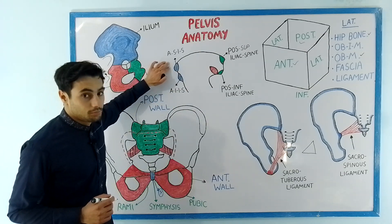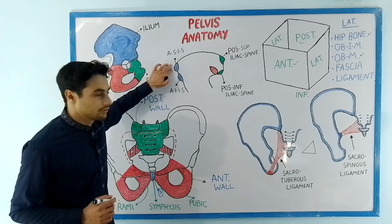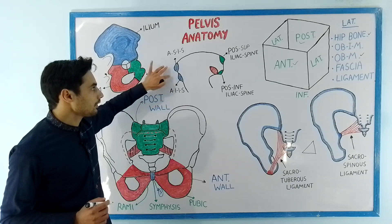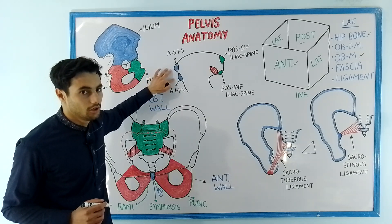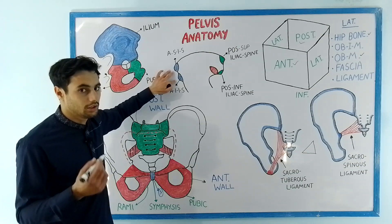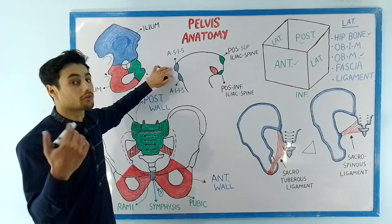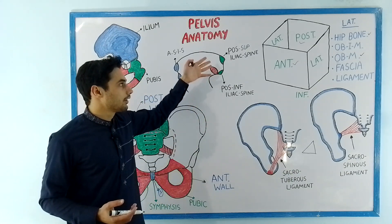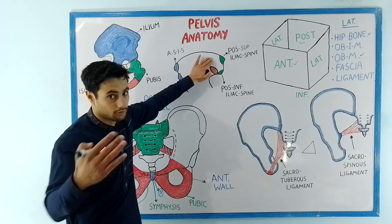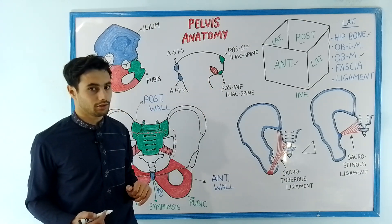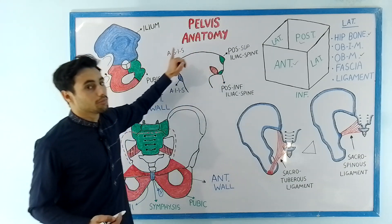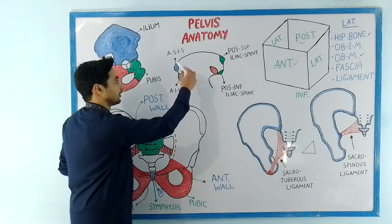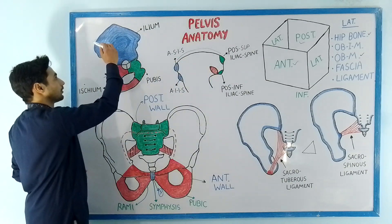The four spines are: the anterior superior iliac spine, the anterior inferior iliac spine, the posterior superior iliac spine, and the posterior inferior iliac spine. The spines present on the anterior side are named accordingly — one is superior and the other is inferior. We also have the iliac crest, which runs between the anterior superior iliac spine and the posterior superior iliac spine.